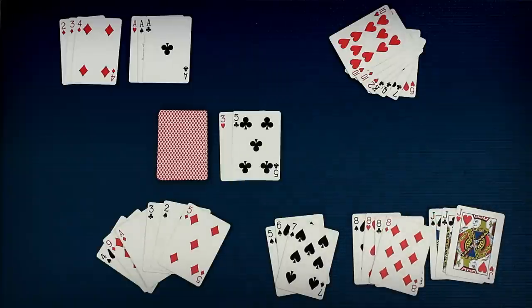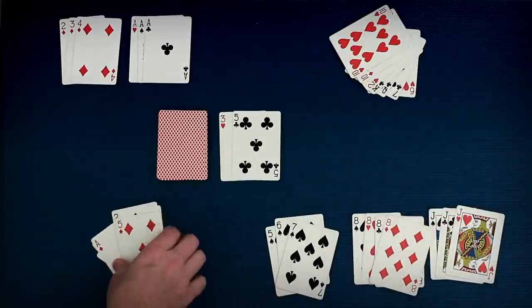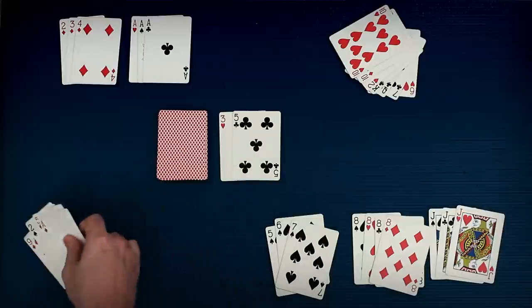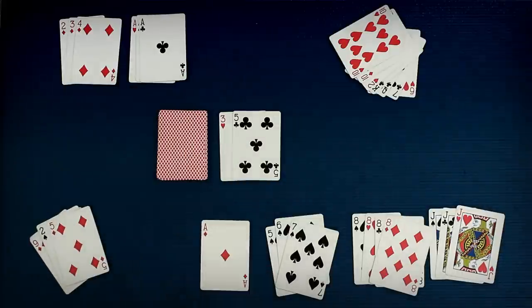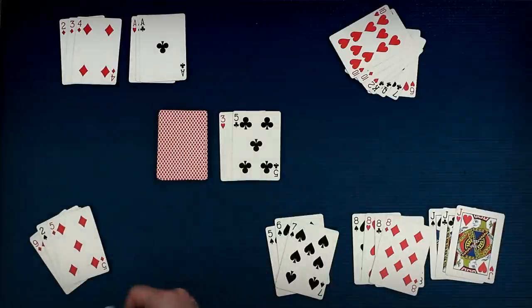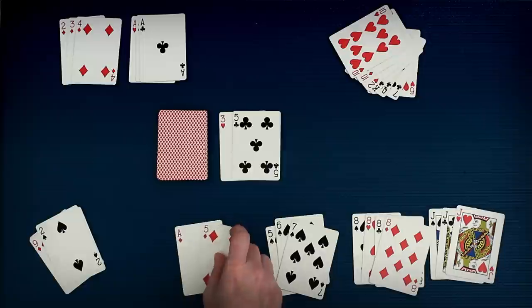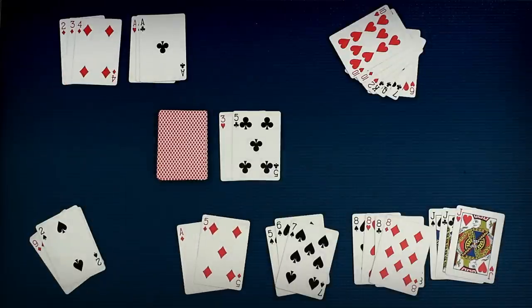You can even add to someone else's existing meld. That's called laying off. Here's an example. I can lay off this ace as part of that melded set. Or I could lay off this ace and five of diamonds as part of that run. Someone else could later lay off a six of diamonds to continue that run. When you lay off you have to specify which meld it is a part of. And again, once a card is melded, you can't use it in another. That goes for layoffs too.